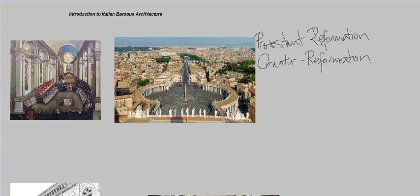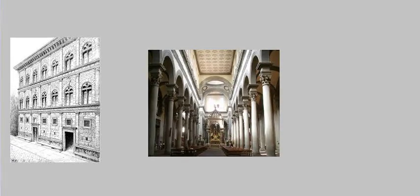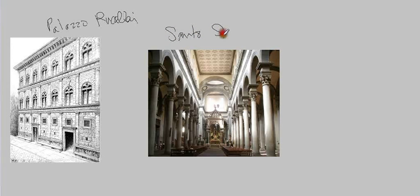So how does this relate to architecture? To fully understand this, it's important to quickly review where we're coming from — the architecture of the Italian Renaissance. On the left is the Palazzo Ruccelli in Florence by Alberti, dating to around 1450. On the right is the interior of the Church of Santo Spirito by Brunelleschi, also in Florence, dating to the 1440s. Don't worry about knowing the names and dates — this is just for review.